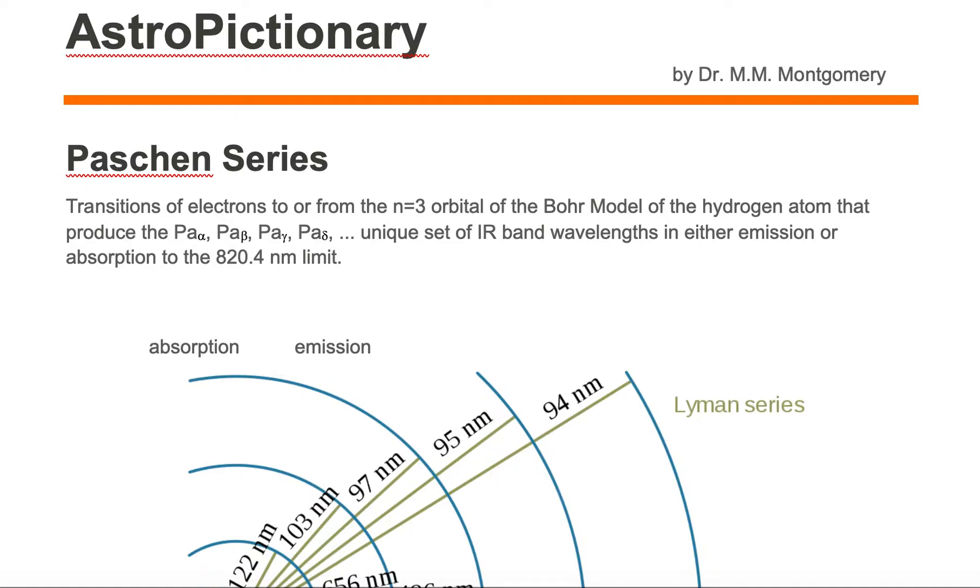The Paschen series are transitions of electrons to or from the n equals 3 orbital of the Bohr model of the hydrogen atom that produce the Paschen alpha, Paschen beta, Paschen gamma, and Paschen delta unique set of infrared band wavelengths in either emission or absorption to the 820.4 nanometer limit.